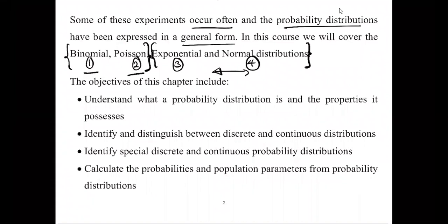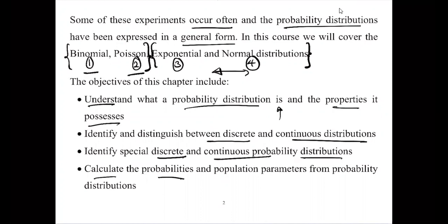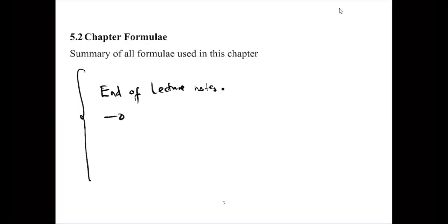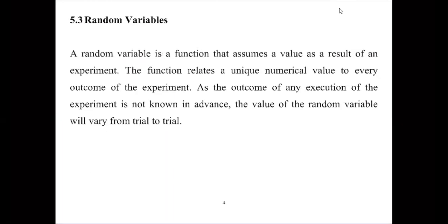The objectives of this chapter include understanding what a probability distribution is and the properties it possesses, identifying and distinguishing between discrete and continuous distributions, and calculating probabilities and population parameters from probability distributions. There will be some formulas at the end of the lecture notes.